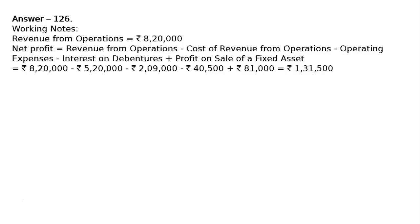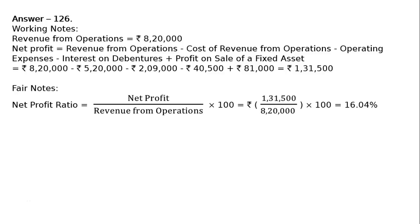Net profit ratio is equal to net profit upon revenue from operations into hundred. That is equal to rupees one lakh thirty one thousand five hundred upon eight lakh twenty thousand into hundred, which equals sixteen point zero four percent.